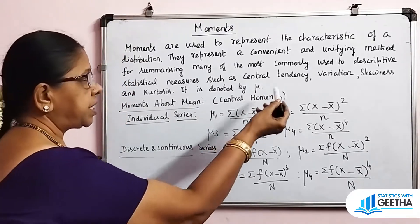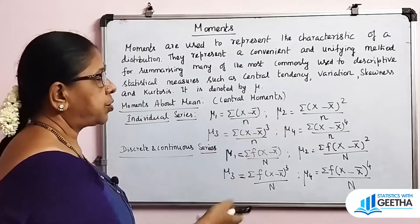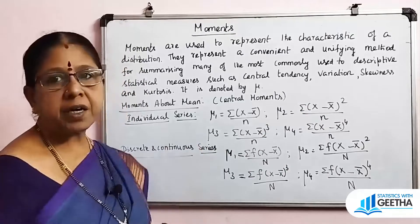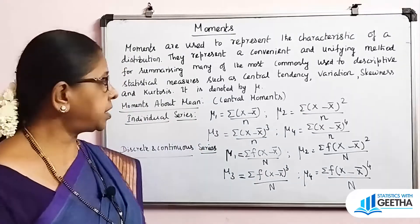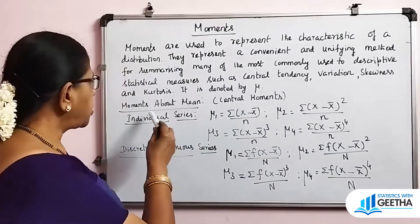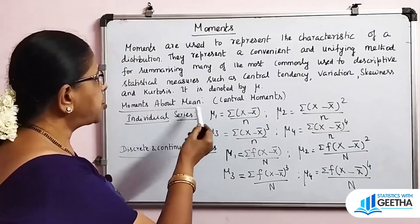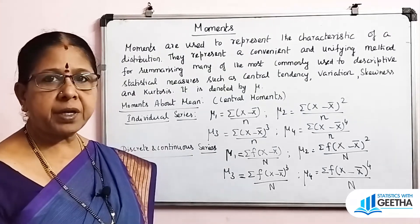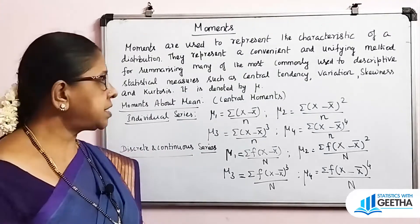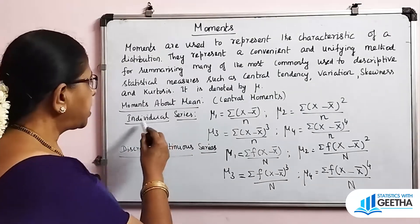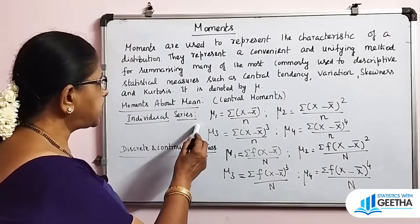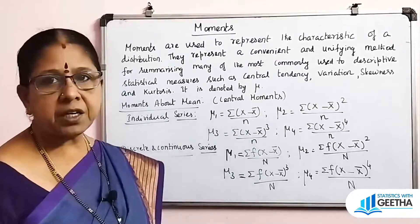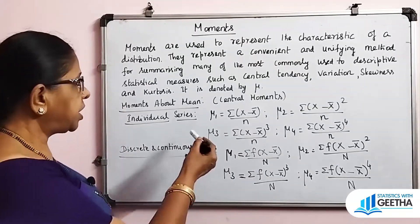We are going to find the measure of skewness and kurtosis. First, we'll look at moments about the mean. Moments about the mean are called central moments. For individual series there is a separate formula, and for discrete and continuous series the formula changes.